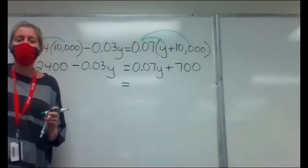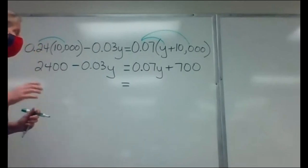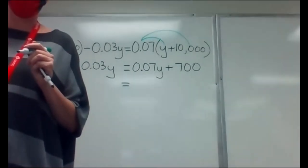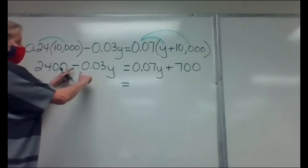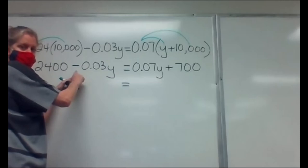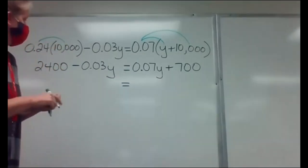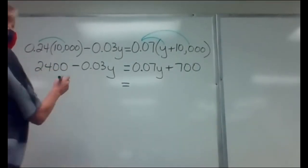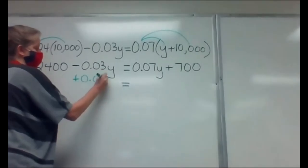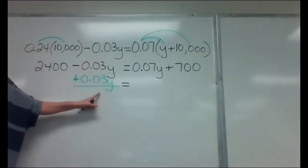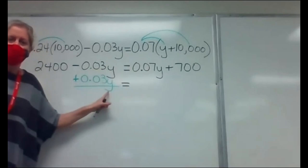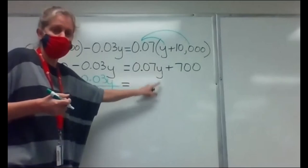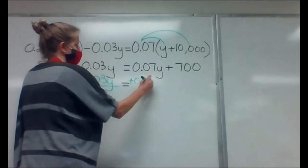Now: do I have all my Y's together on one side? I don't — I have Y's on both sides. I want to cancel out my smallest one. If one is negative and one is positive, the negative one is always smaller. So I'm cancelling out the minus 0.03Y by adding plus 0.03Y to both sides. If you do it to this side, you've got to do it to the other side. I'm adding 0.03Y to the right side, where it joins the other Y's.